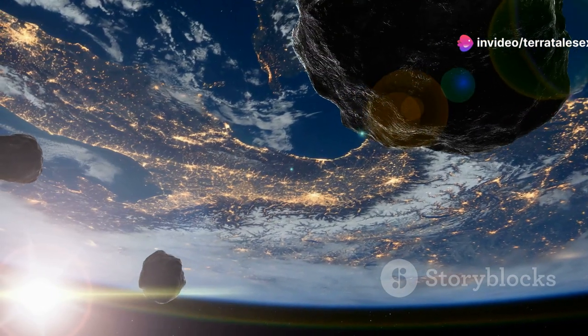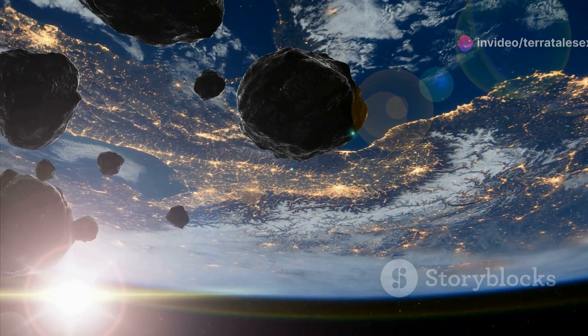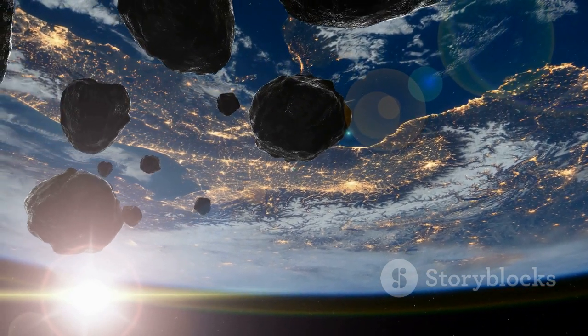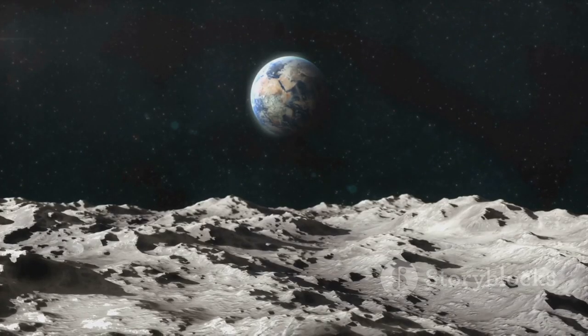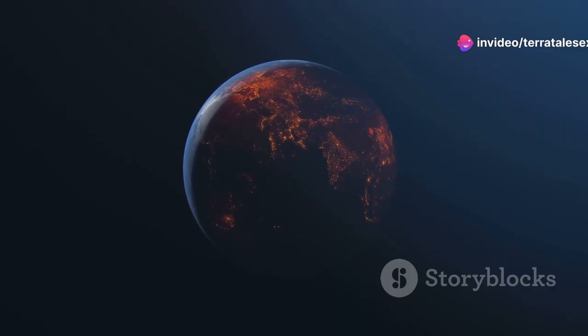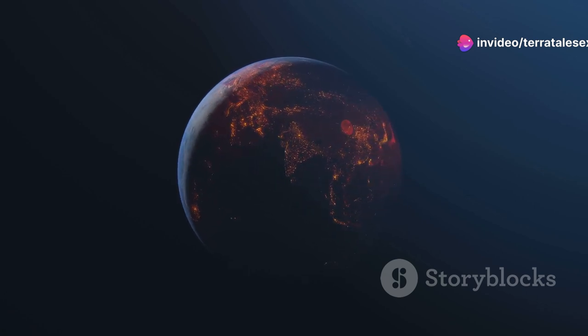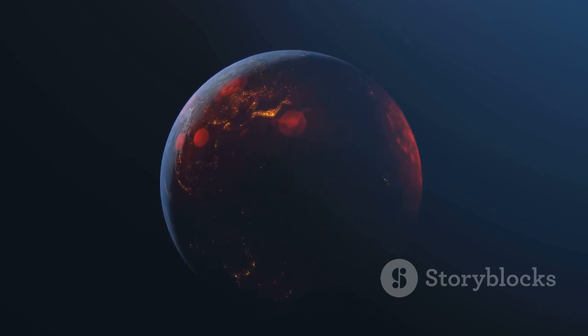The constant bombardment of planetesimals, which were small solid objects, generated immense heat within its interior. These impacts were not just frequent but also incredibly violent, contributing to the intense thermal energy that began to shape the young planet. This heat, combined with the pressure from the accumulating material, began to melt the proto-Earth's core.